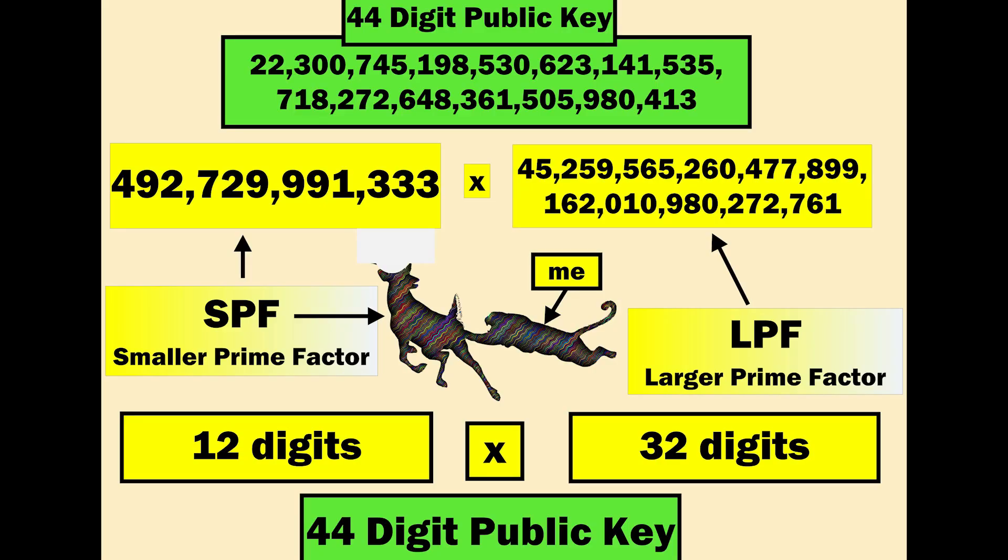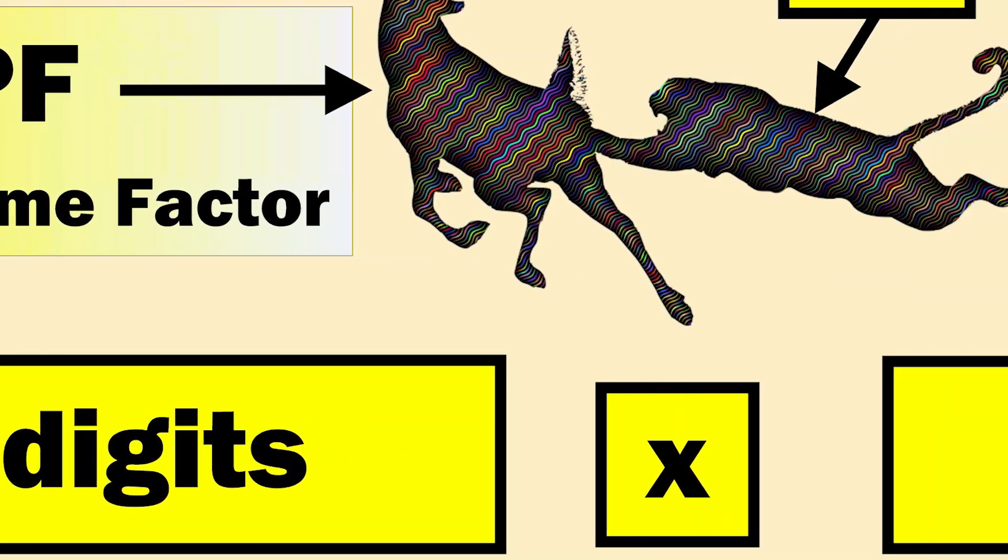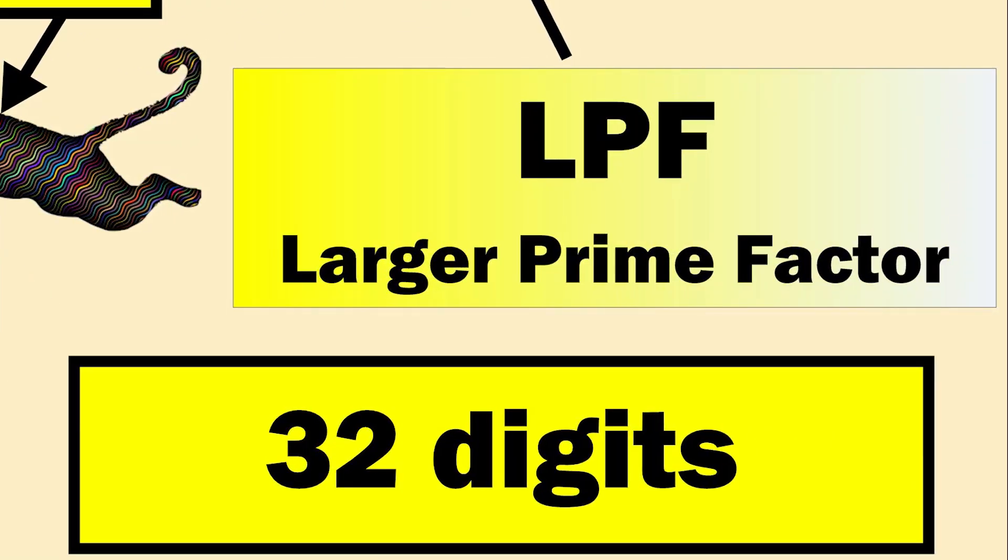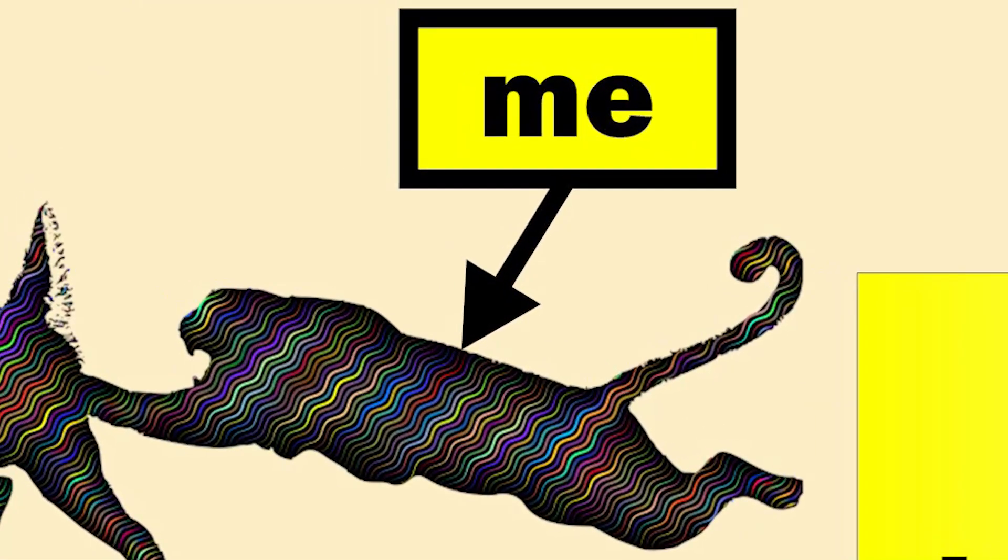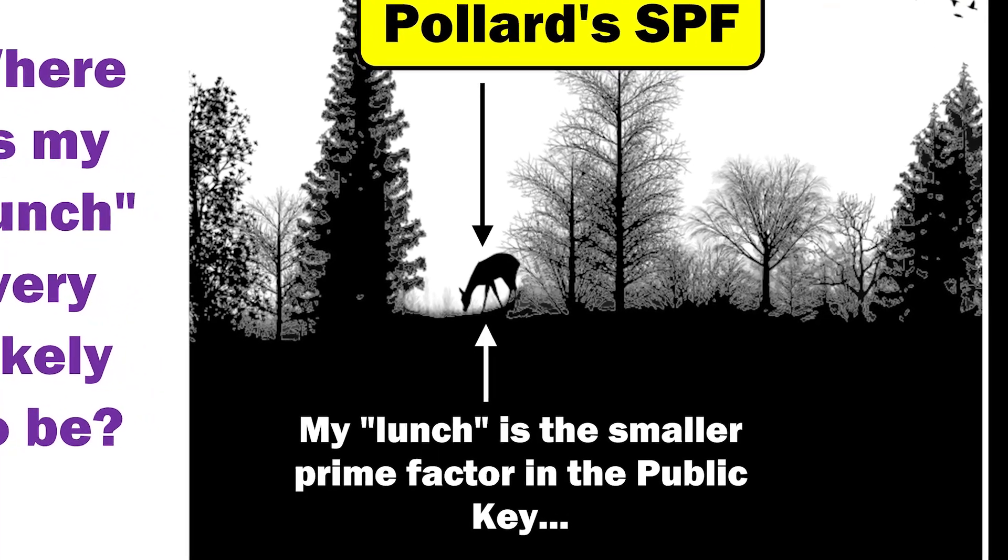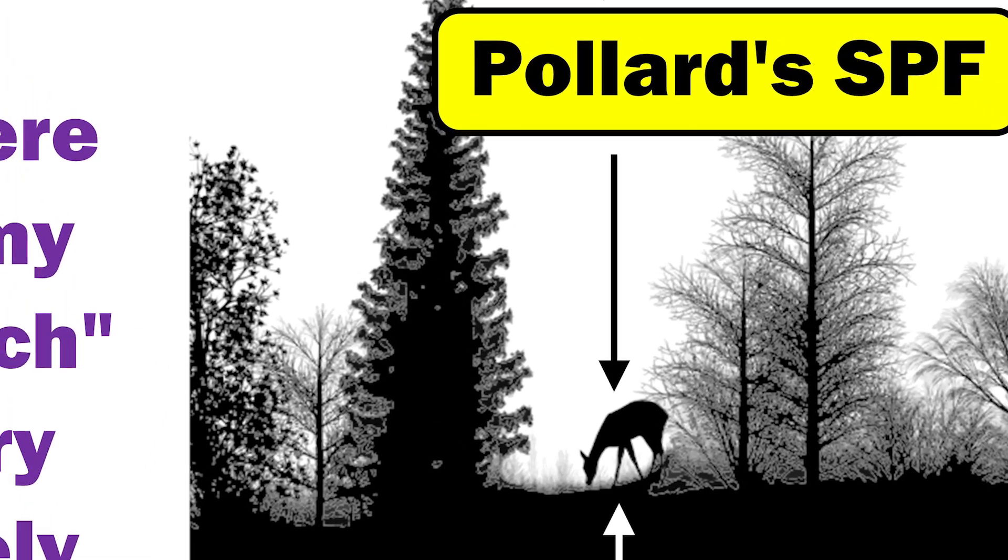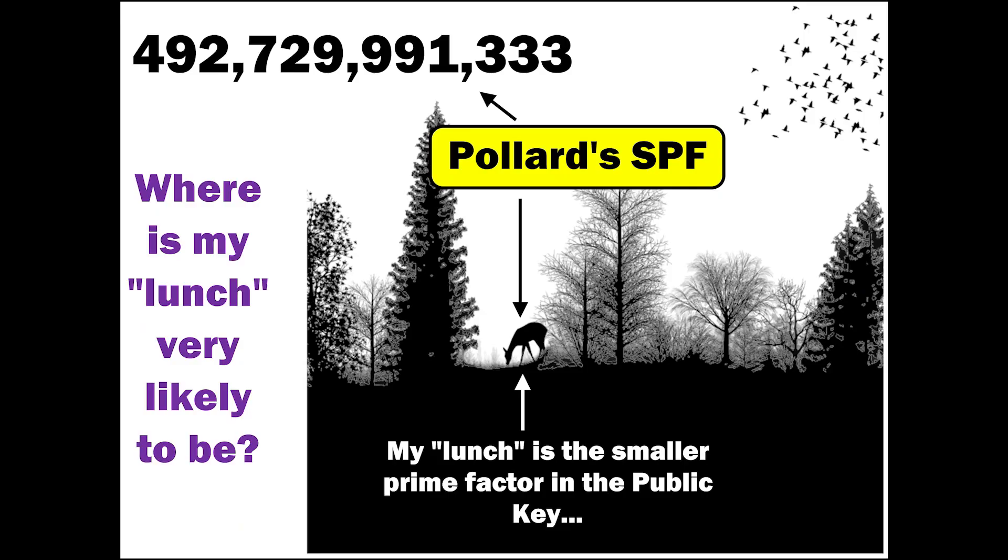Pollard had this massive 44-digit public key. It had a smaller prime factor of 12 digits and the larger prime factor was 32 digits. The big cat in the middle is me. The deer is my dinner. That's how I hunt. My lunch is always going to be the smaller prime factor in the public key. Pollard's SPF was this big number. So I asked myself, where is my lunch very likely to be?